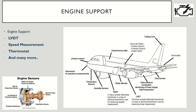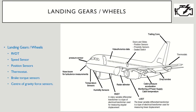The next section is landing gears and wheels. These extensively use RVDT — the Rotary Variable Differential Transformer — along with speed sensors, position sensors, thermostats, brake torque sensors, and center of gravity force sensors. All these sensors are extensively used to help someone land the aircraft perfectly.